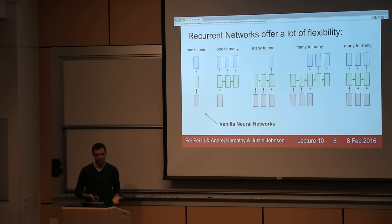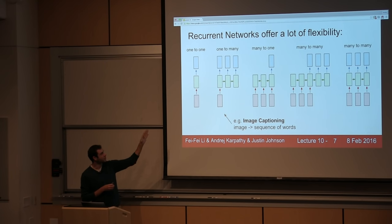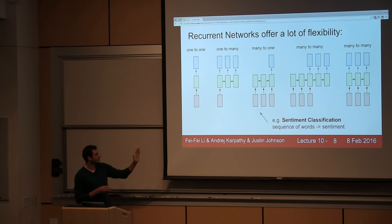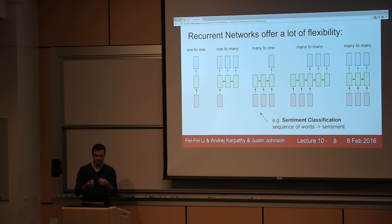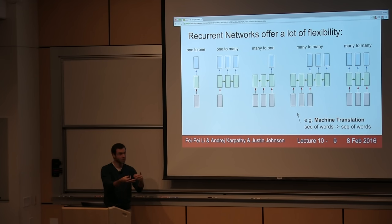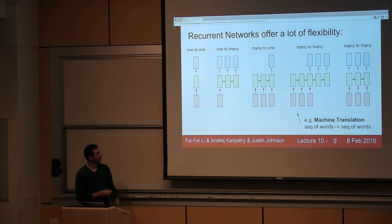With recurrent neural networks, we can actually operate over sequences — sequences at the input, output, or both at the same time. For example, in the case of image captioning, you're given a fixed-sized image and then through a recurrent neural network we're going to produce a sequence of words that describe the content of that image — a sentence that is the caption for that image. In the case of sentiment classification in NLP, we're consuming a number of words in sequence and then classifying whether the sentiment of that sentence is positive or negative. In the case of machine translation, we can have a recurrent neural network that takes a number of words in English and produces a number of words in French as a translation — a sequence-to-sequence setup. This recurrent network would perform translation on arbitrary sentences in English into French.